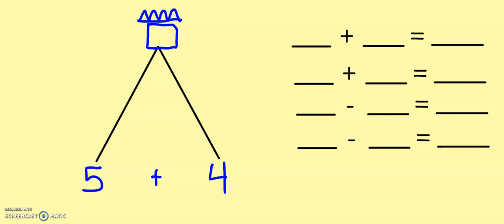I'm going to use touch points. You might want to use a different strategy. Five, six, seven, eight, nine. Five plus four is nine. So nine is my biggest number and it gets to live at the top of the math mountain since it's the total or the sum.